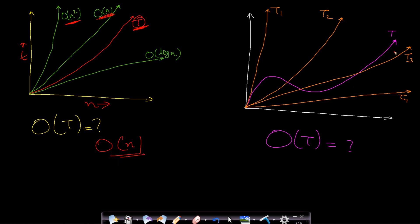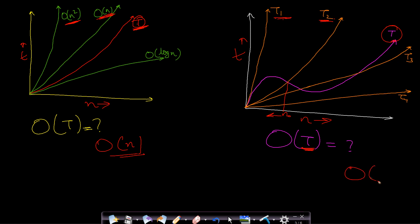Now what will be the worst-case time complexity in this second graph? The pink curve is the time taken by your program — this is t and this is input size n. Upper bounds are calculated by taking larger values of n, not smaller values. For a value of n lower than n0, t2 will not be an upper bound. For larger values of n, t2 and t1 are both upper bounds of t, but t2 is much closer to t compared to t1. Therefore the worst-case time complexity of this curve t will be O(t2).